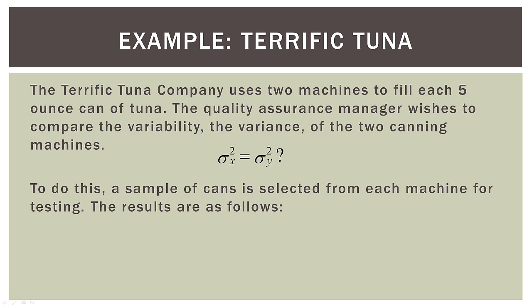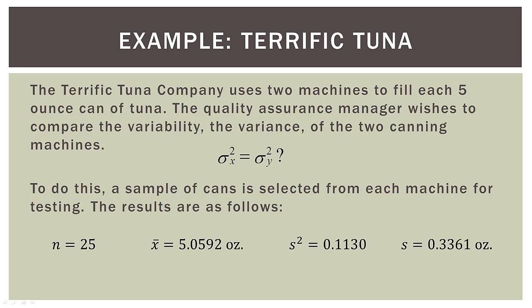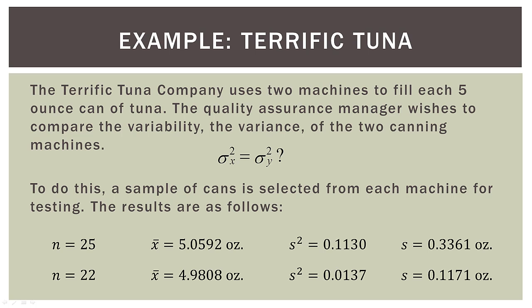So to do this, we collect a sample of cans from each machine for testing. The results are as follows. For machine one with a sample size of 25, a mean filling weight of 5.0592 ounces, a sample variance of 0.1130, and a sample standard deviation of 0.3361 ounces. For machine number two with a sample size of 22, a mean filling weight of 4.9808 ounces, a sample variance of 0.0137, and a sample standard deviation of 0.1171 ounces. So remember here, we're comparing the variances.